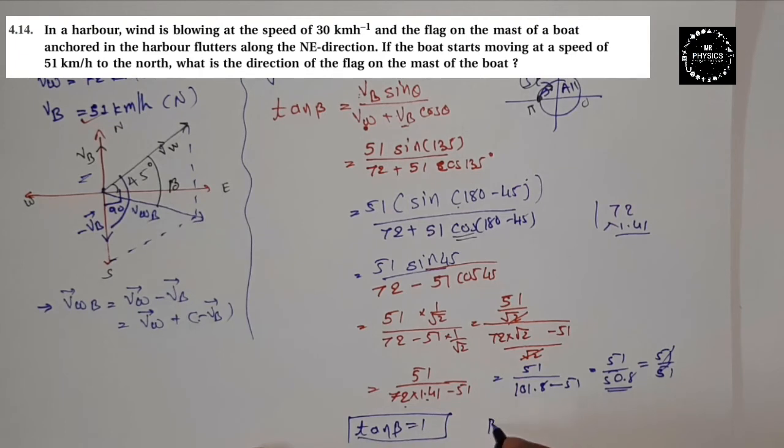So here, beta is equal to tan inverse 1. Now the value of tan 1, everyone knows that beta is equal to 45 degrees.